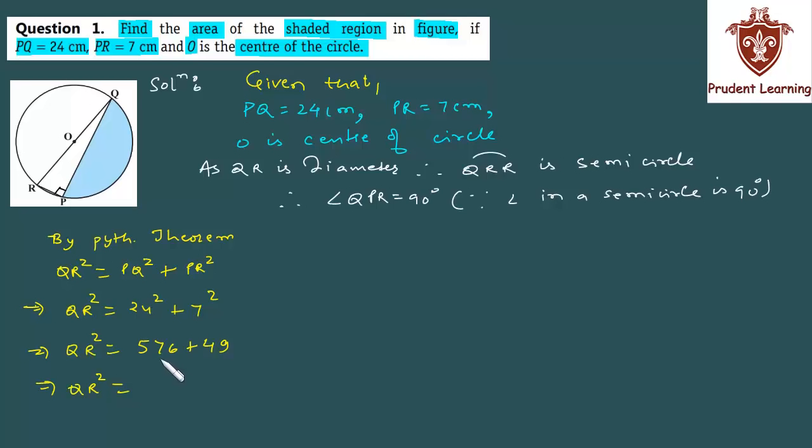So you get QR squared as 576 plus 49, which equals 625. And taking square roots on both sides, we have QR as the square root of 625. So we have QR as 25 cm. So the given circle has diameter found as 25 cm. Now, we have diameter as 25 cm, which implies the radius of the circle is 25 by 2 cm. Now you can easily find the semicircle area.